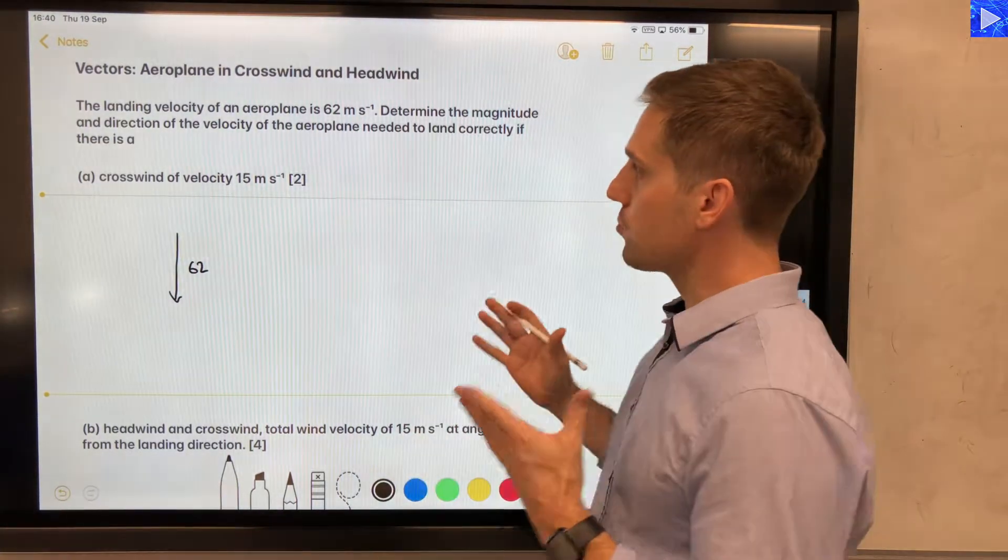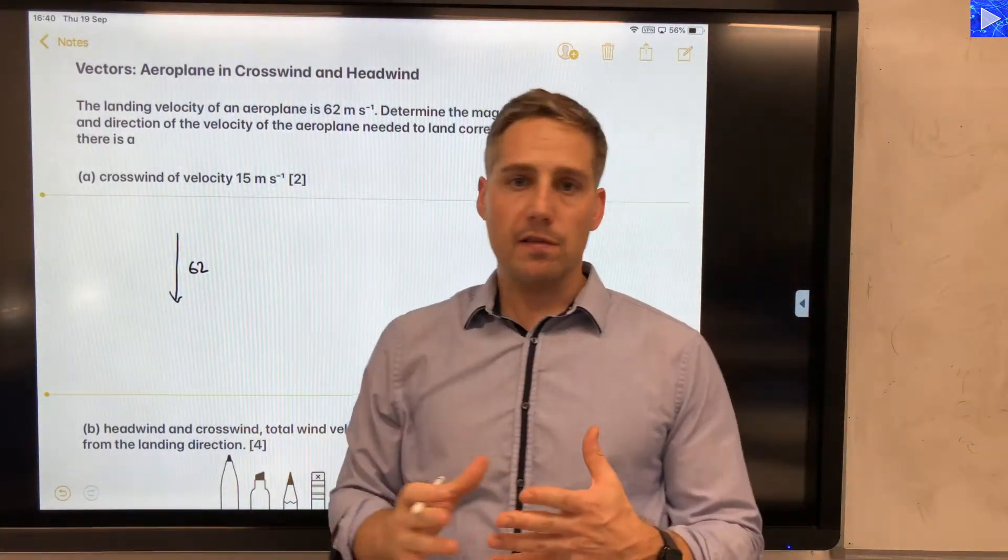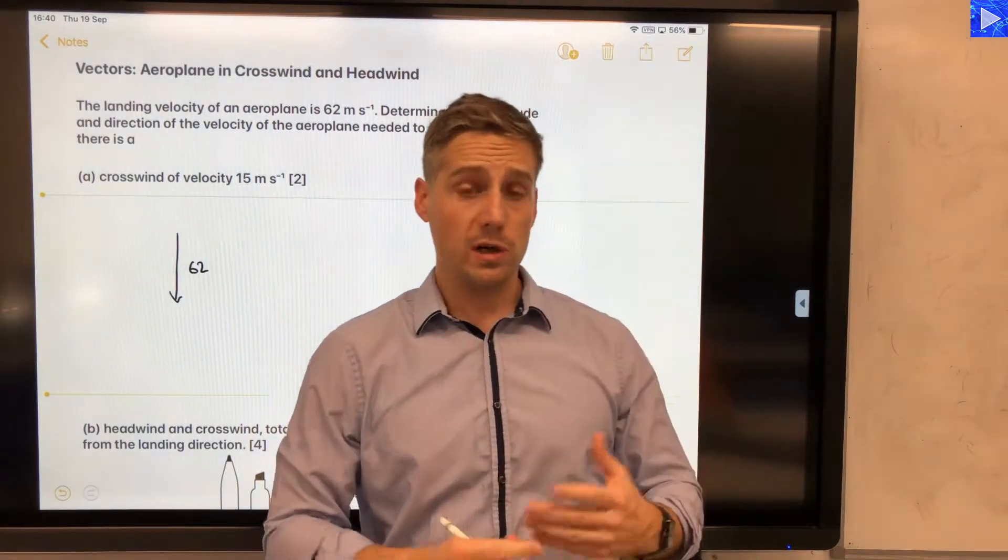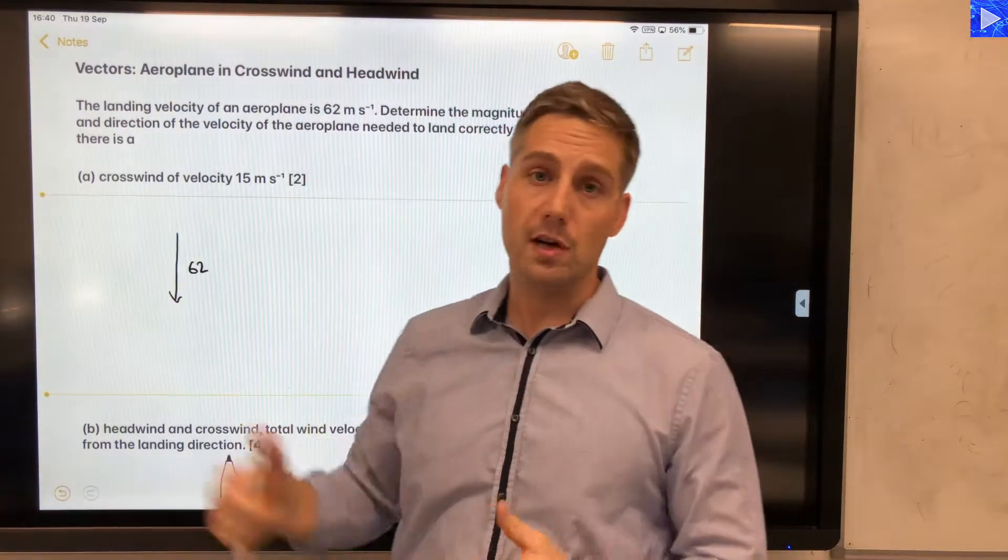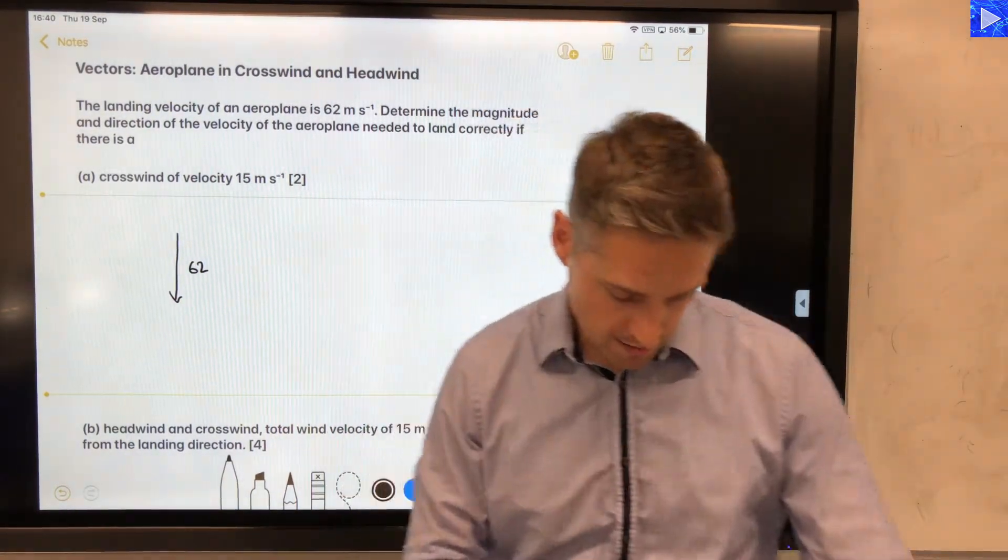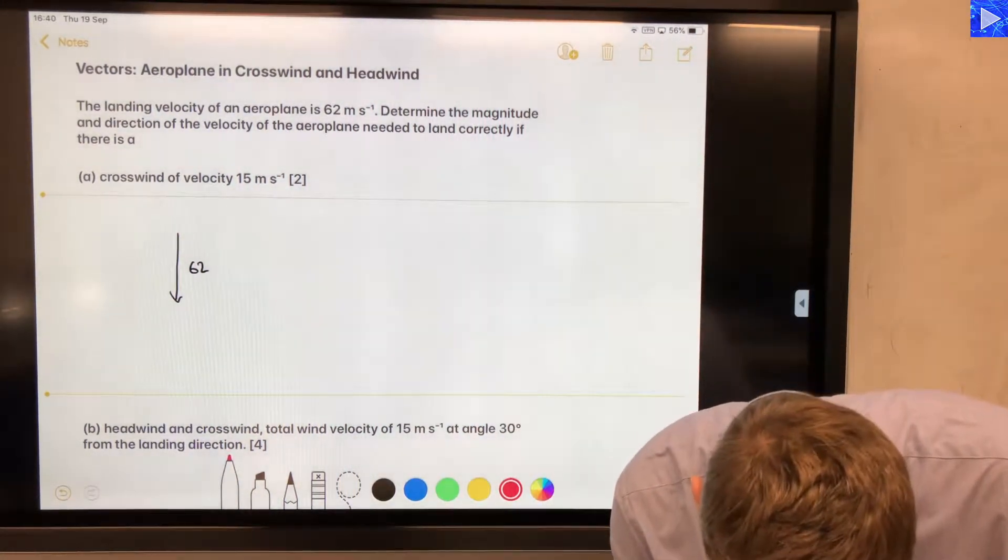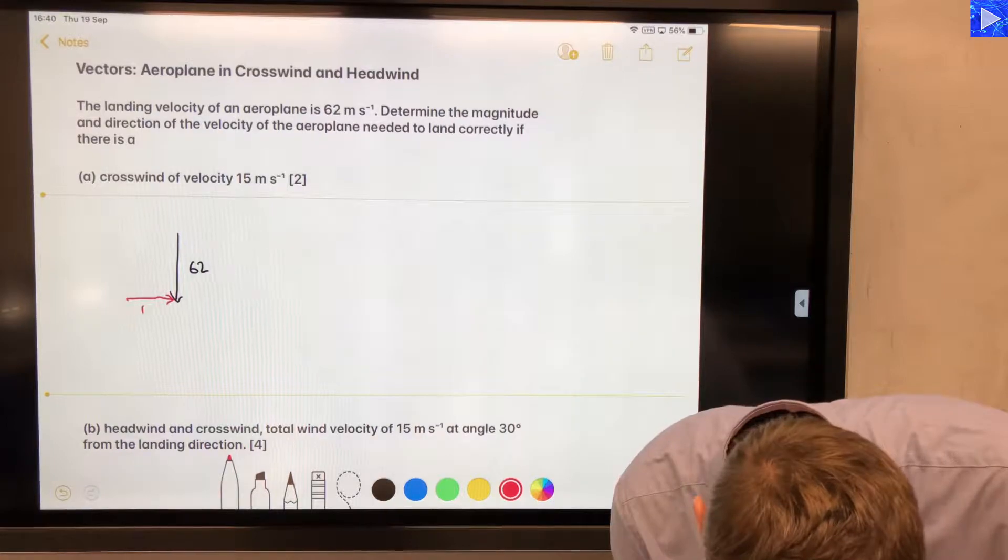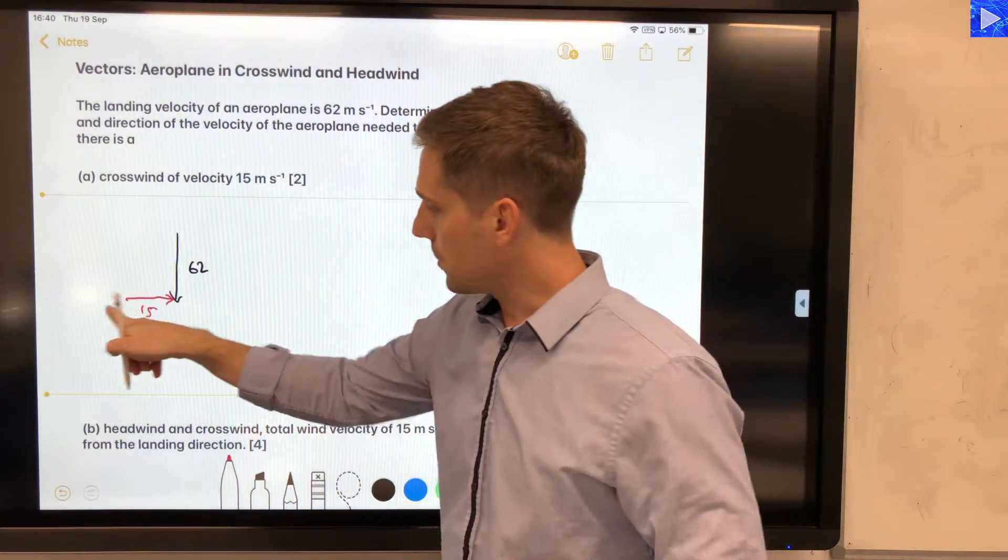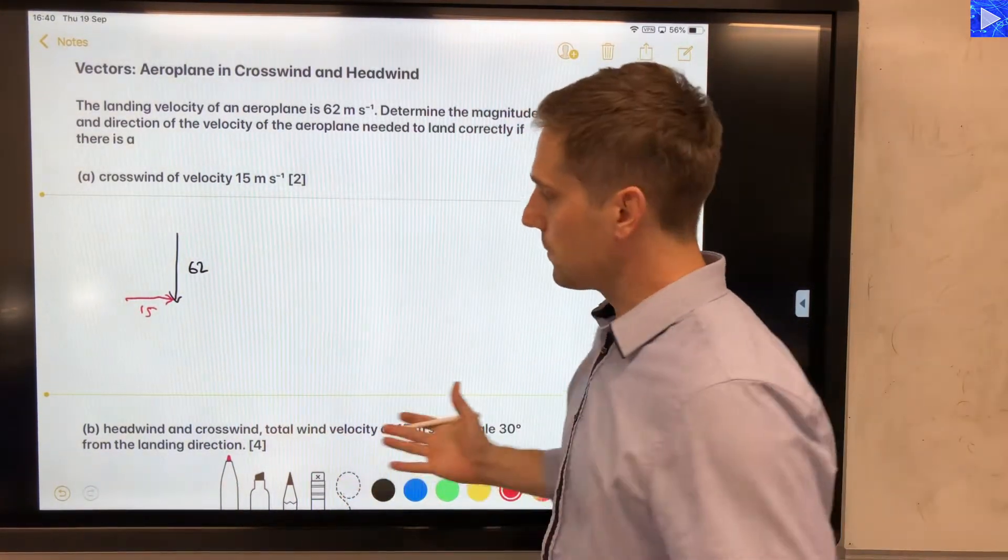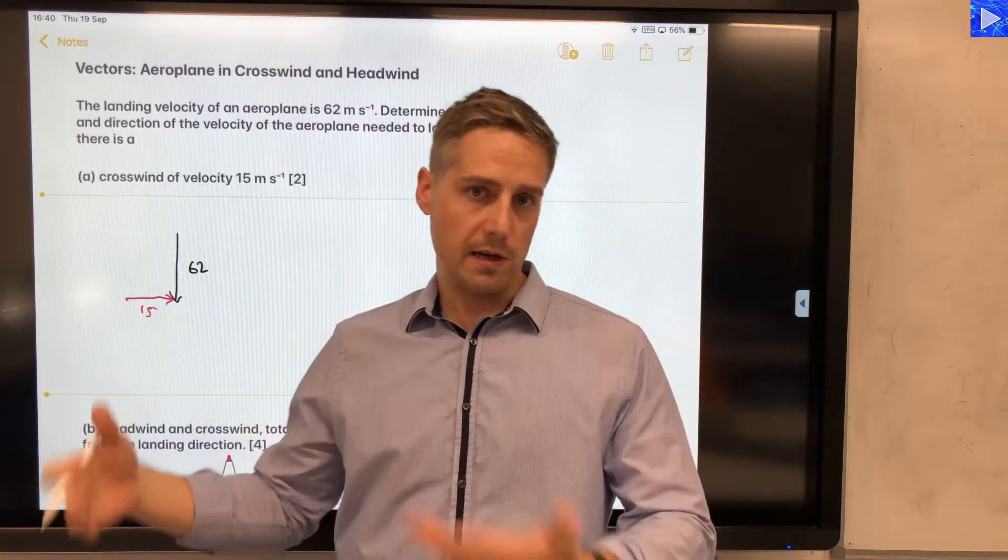Okay, now we have a crosswind and there's no angle given to the crosswind, so we'll assume that it's perpendicular to the direction of the runway, the desired direction of travel. So I'm going to draw that in here like this, so this is 15 meters per second to the right in this case. It doesn't really matter which way you choose, left or right.